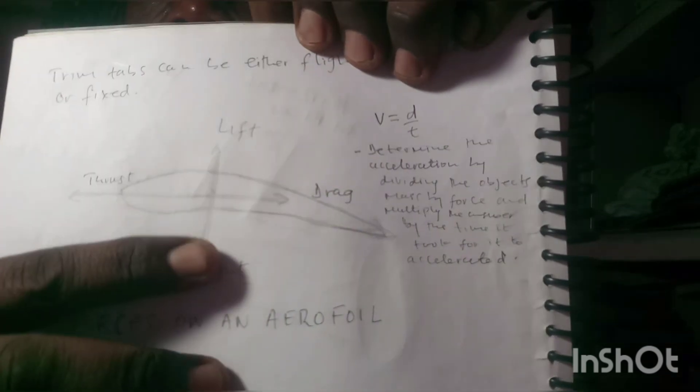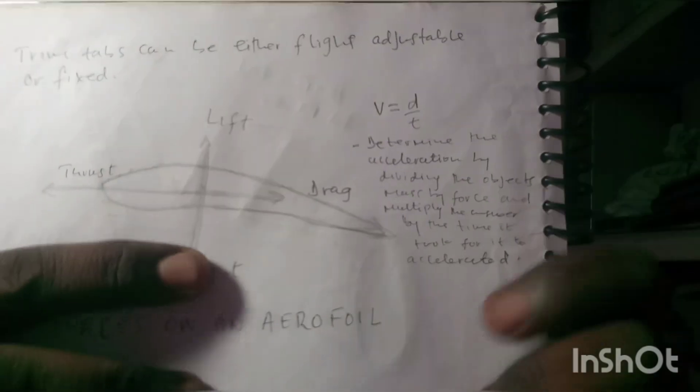According to Bernoulli, he brought a formula: static pressure P plus dynamic pressure — that's density times velocity squared over 2 — plus density times G (the relation due to gravity) times height, will be equal to a constant along a streamline.